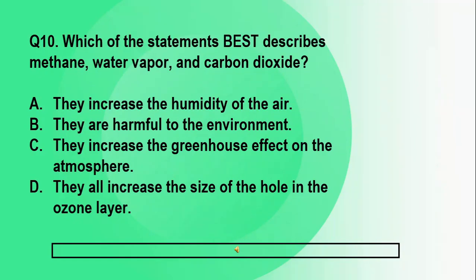Question number 10. Which of the statements best describes methane, water vapor, and carbon dioxide? A. They increase the humidity of the air. B. They are harmful to the environment. C. They increase the greenhouse effect on the atmosphere. And D. They all increase the size of the hole in the ozone layer.